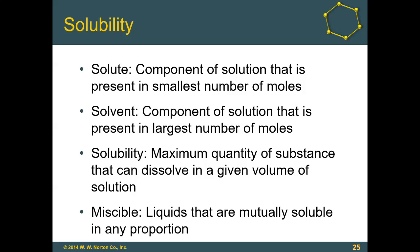Miscible is a term used to refer to two liquids that can mix with each other in any proportion, so either one could be considered the solute or solvent depending on which is present in the smaller number of moles. Examples include methanol and water, acetone and water, and ethanol and water.